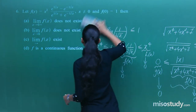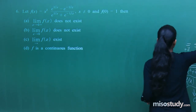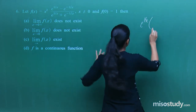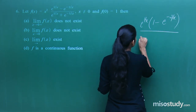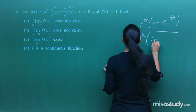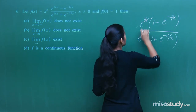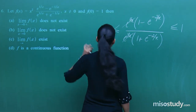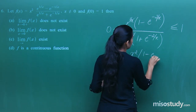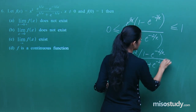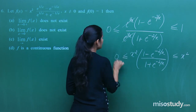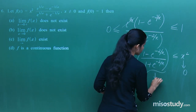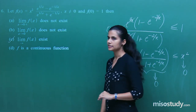For the next function, at x = 0 we evaluate its limit using the sandwich theorem. Taking out e^(1/x) common from numerator and denominator, we are left with (1 − e^(−2/x))/(1 + e^(−2/x)), which always lies between 0 and 1. Multiplying by x², we get 0 ≤ f(x) ≤ x². Since x² → 0 as x → 0, by sandwich theorem the limit is 0.